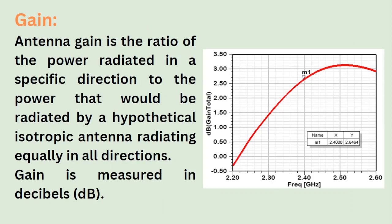Next comes the gain. Antenna gain is the ratio of power radiated in a specific direction to the power that would be radiated by a hypothetical isotropic antenna radiating equally in all directions. Gain is usually measured in decibels.